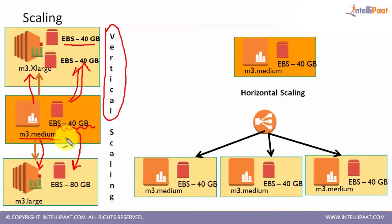Vertical scaling has some limitations. One limitation is it may require the instance to be brought down. In some cases there is a threshold — beyond that, if you keep adding more resources it may not improve performance, because eventually it's a single machine. A single machine has its own limitations and might not work beyond a certain capacity. This applies to both M3.ExtraLarge and M3.Large.